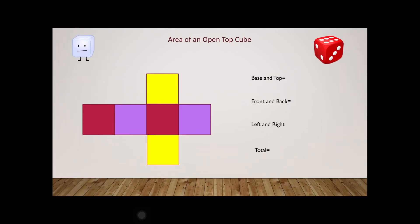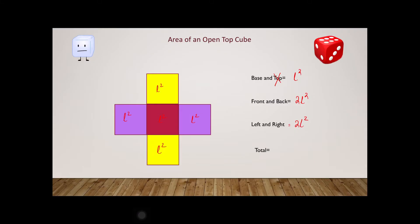A cube will not always be a solid cube — it can sometimes be an open top cube, meaning the top face is missing. In that case, the top face is no more with us. So we still have L² for the base, L² for the front and back (making 2L²), and L² for the left and right (making 2L²). So L² + 2L² + 2L² = 5L². The total surface area of an open top cube is equal to 5L².